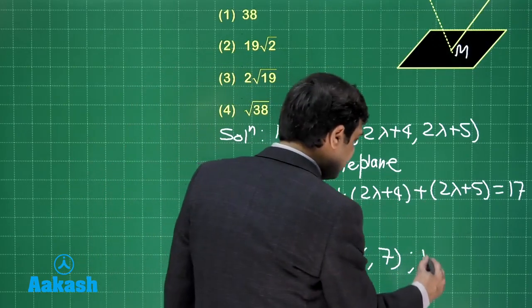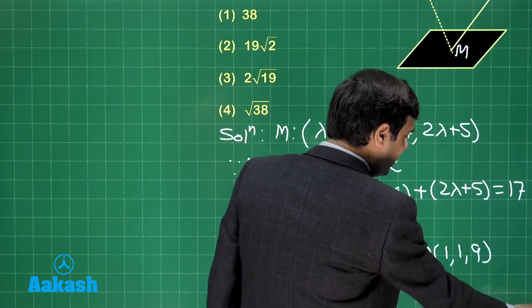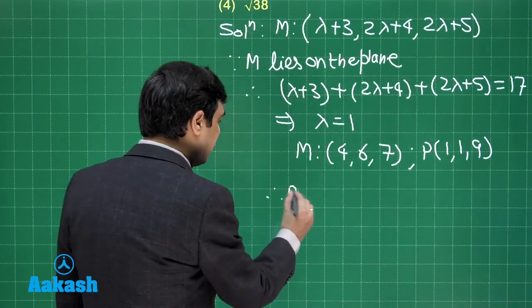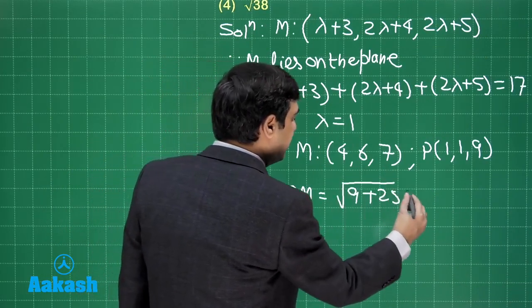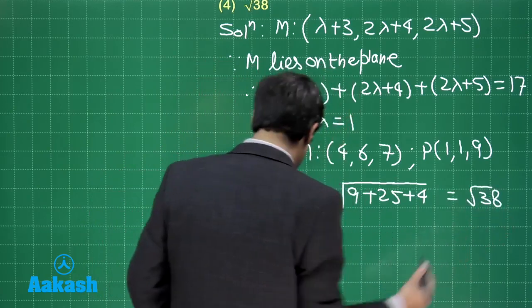P is already given to us as (1, 1, 9). We are looking for the distance PM. Just apply the distance formula to get the required length. Therefore, length PM is equal to square root of 9 plus 25 plus 4, that is root 38 units.